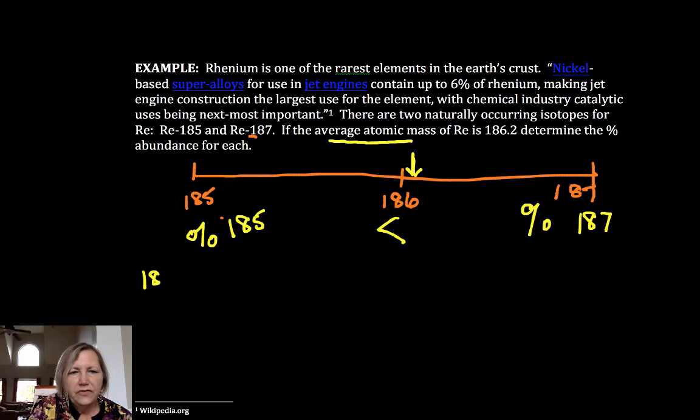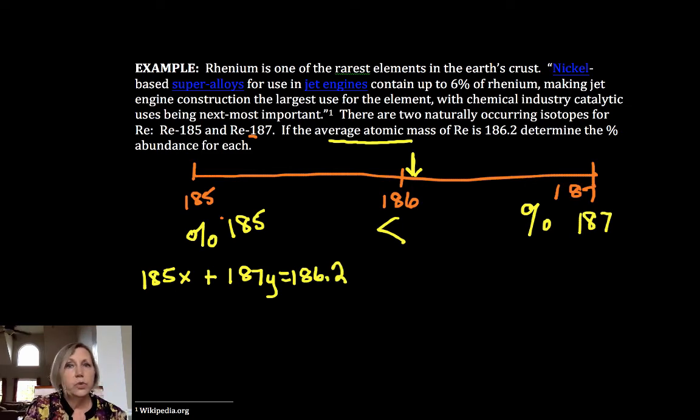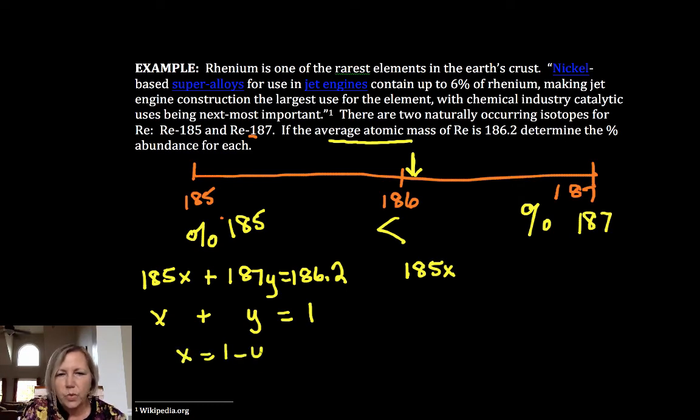So I have 185 times x, I don't know its fractional abundance, plus 187 times y, and that equals my average atomic mass on my periodic table. One equation, two unknowns, except I also know that x plus y is equal to 1. So I'm going to use the method of elimination. You could use substitution. You could solve this as x is equal to 1 minus y, substitute in. I just find that's a lot more algebra because we have such a simple equation here.